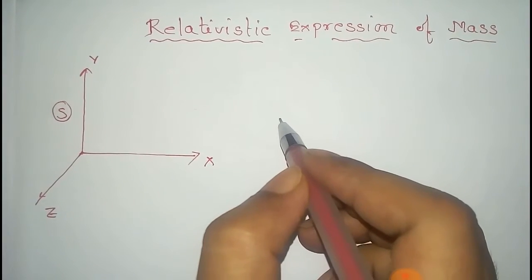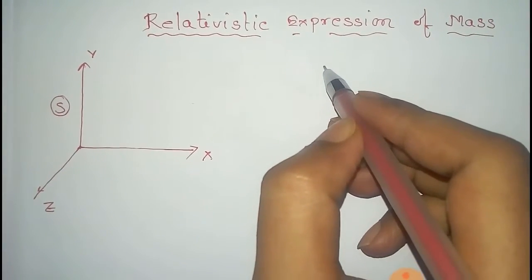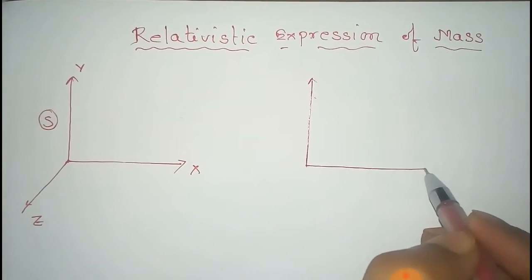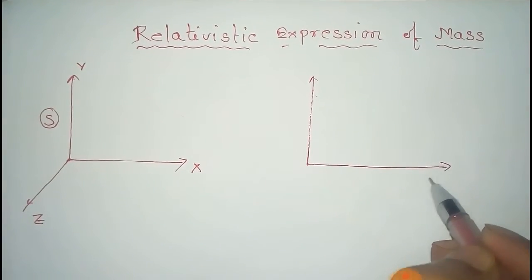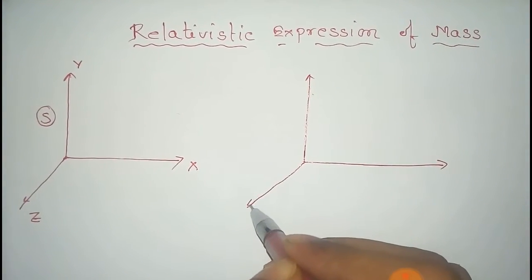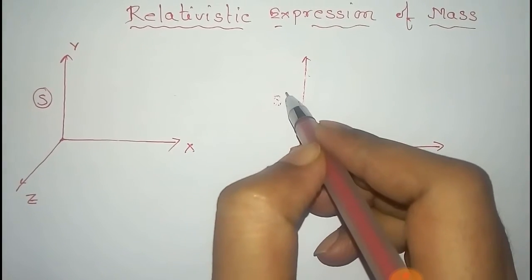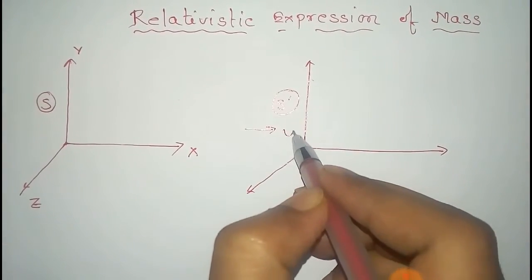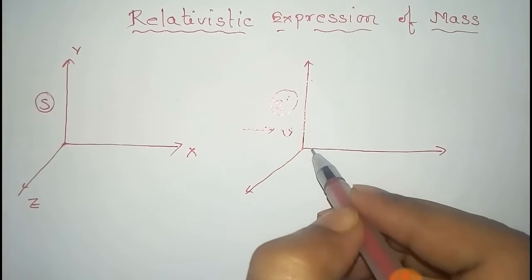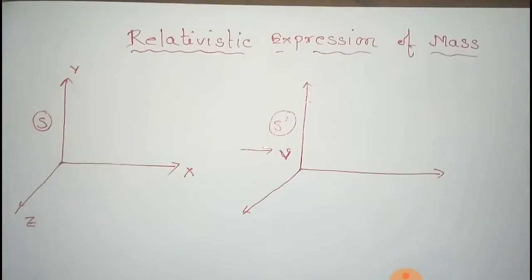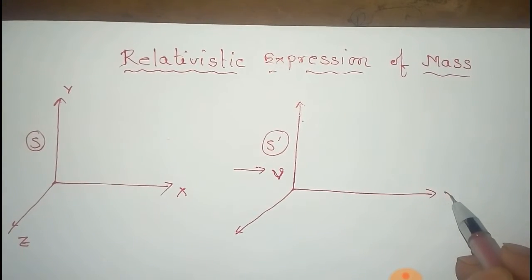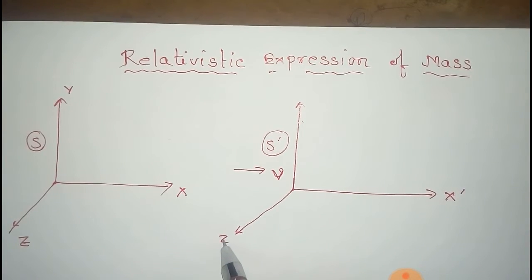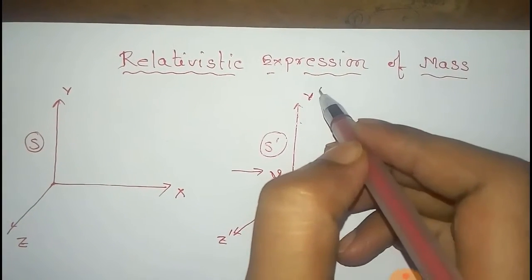Now consider another frame which has a translational motion along the x-axis with respect to this S frame. That is the S prime frame, and it has a motion with velocity v along the x-axis. The coordinates of this frame are x prime, y prime, and z prime.